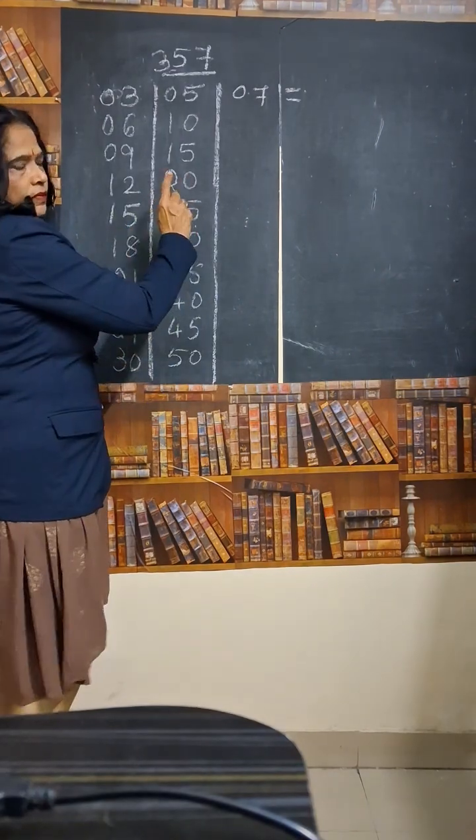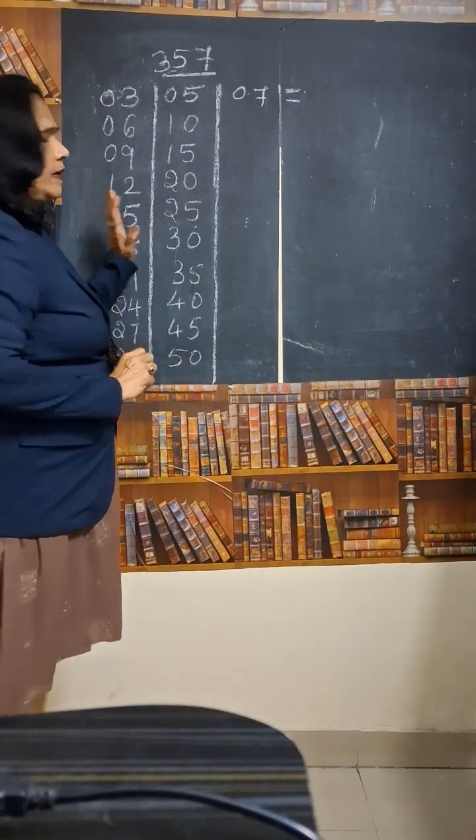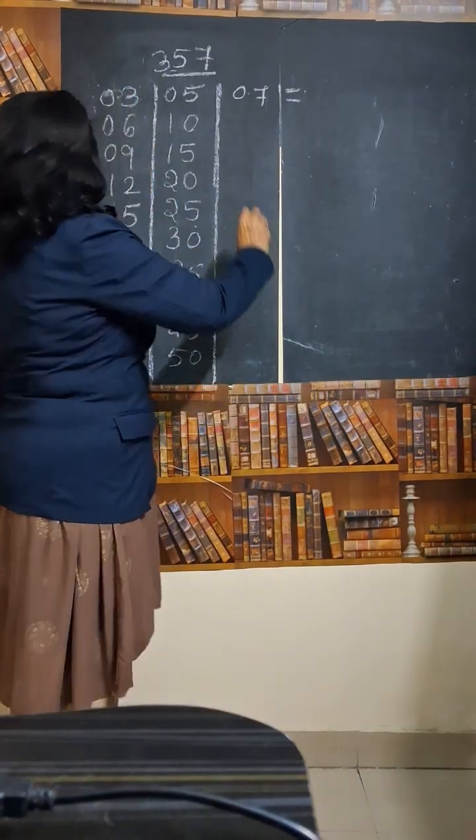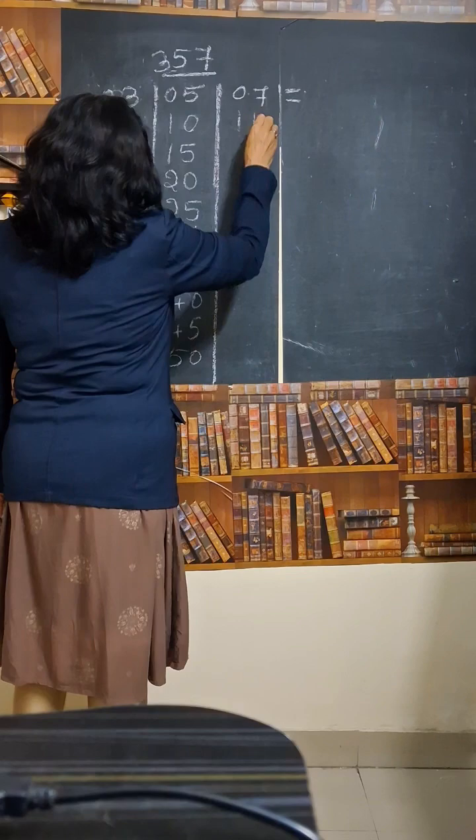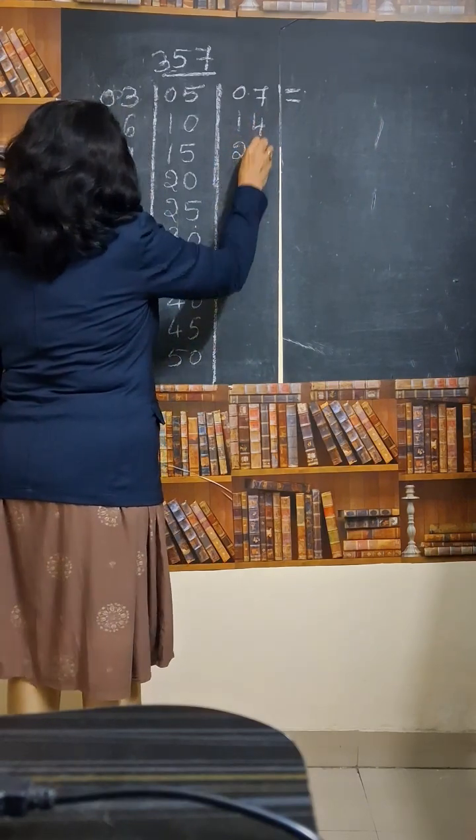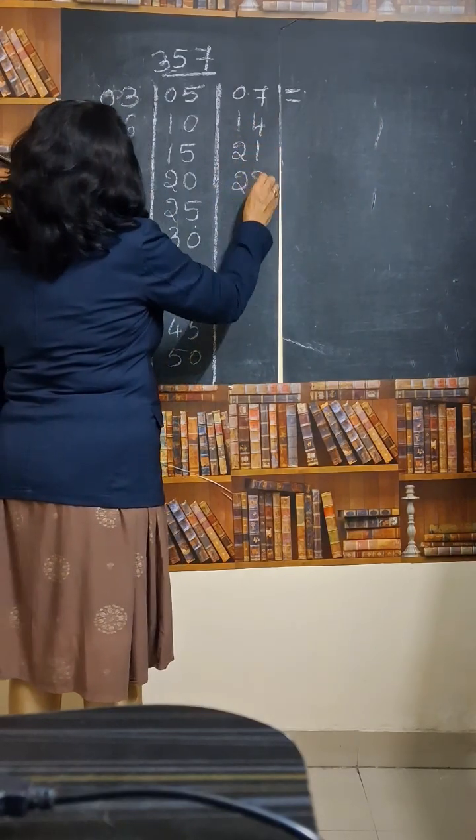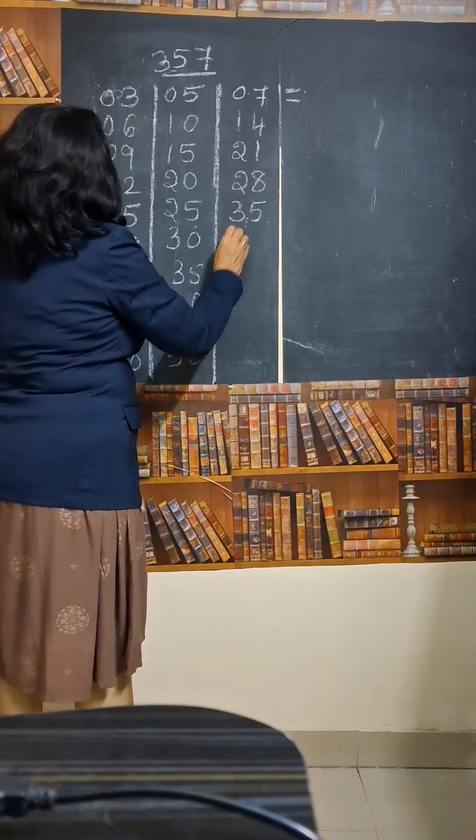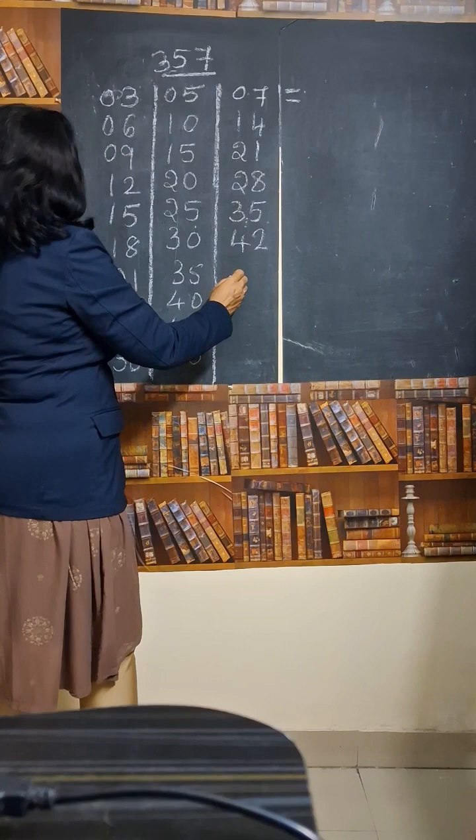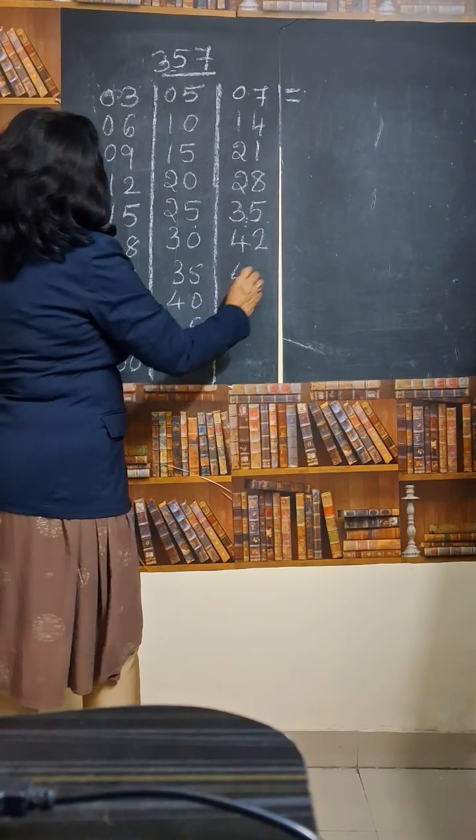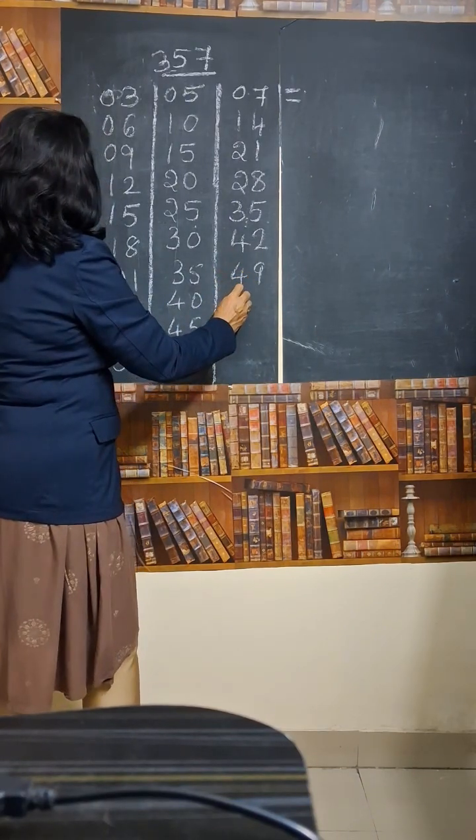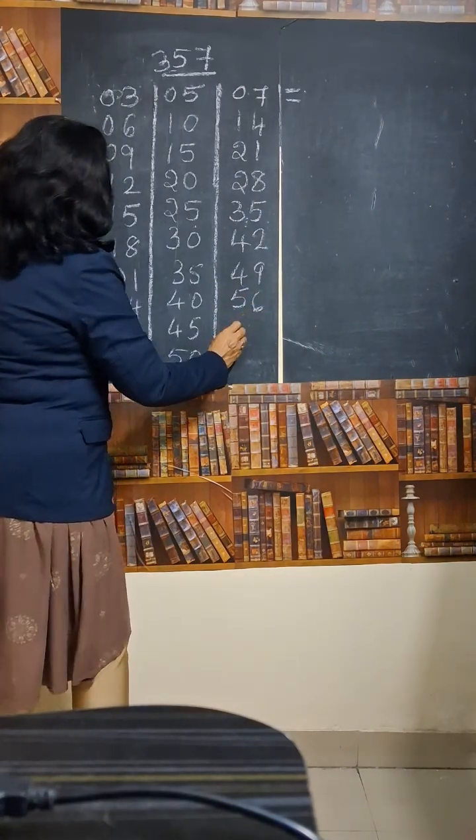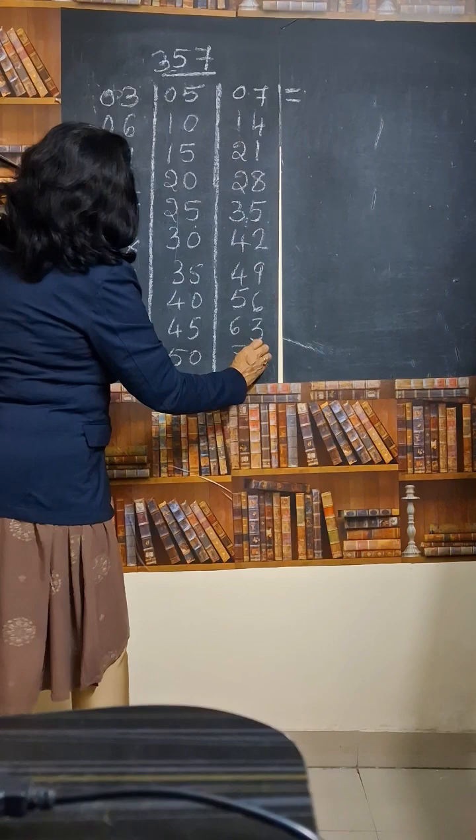So now let us write the tables of 7. We should write the tables of 7 separately. 7, 7 2s are 14, then 21, 7 4s are 28, then 35, then 42, 7 7s are 49, then 56, then 63 and 70.